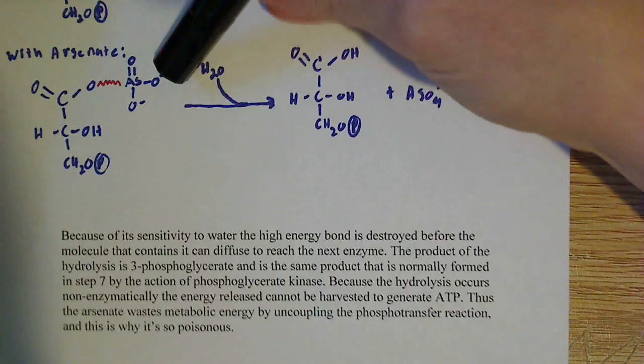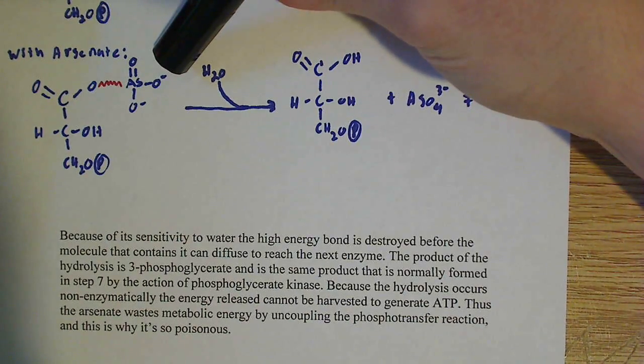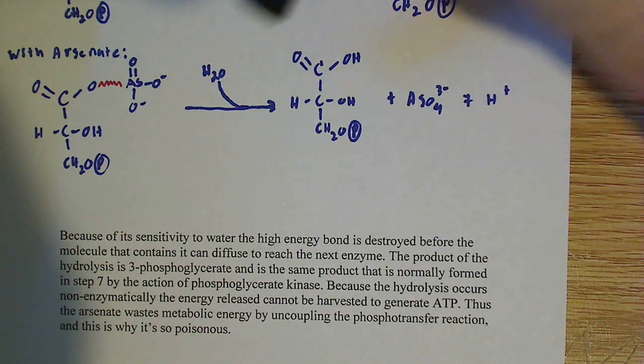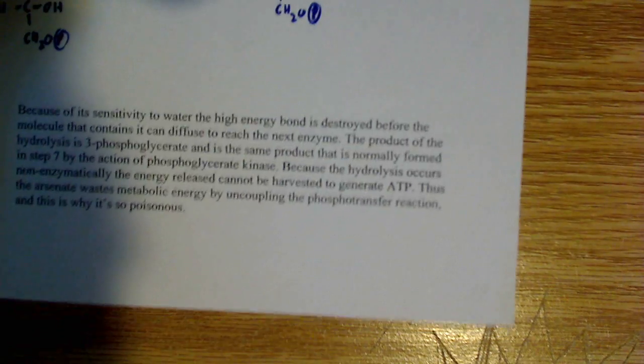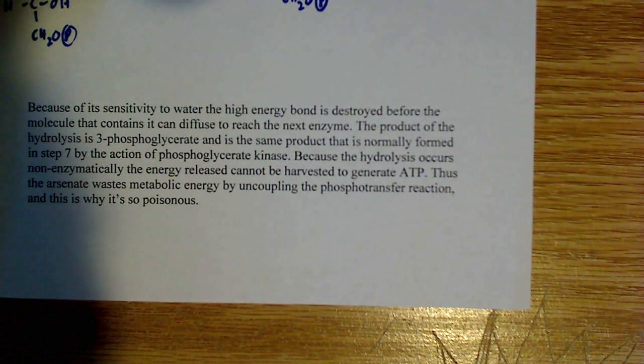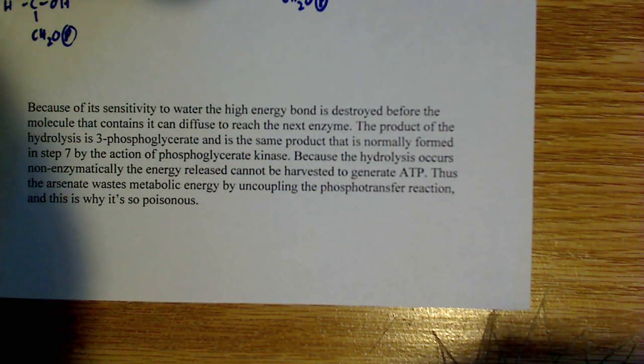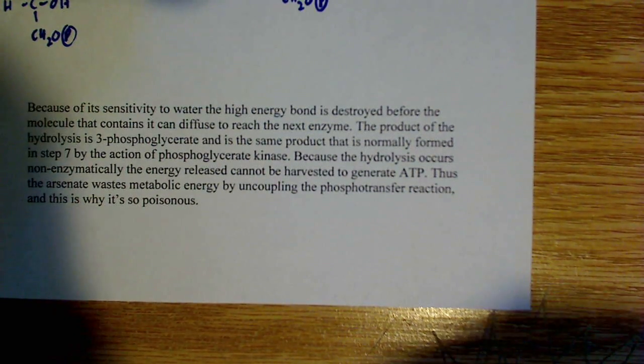In step six, if we have arsenate, then the hydrolysis forms the product of step seven ahead of time. That's normally formed in step seven by the action of phosphoglycerate kinase.